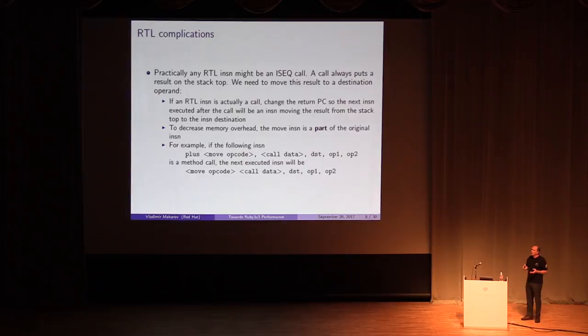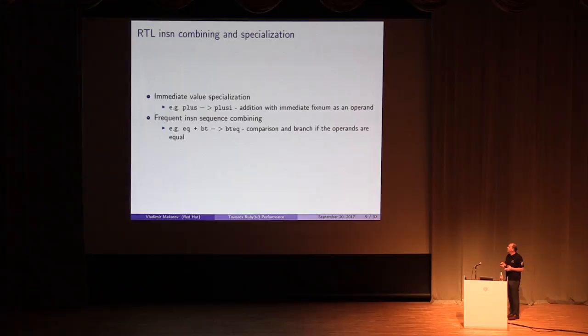To decrease the size of RTL code and overall number of instructions, we generate specialized instructions with immediate operands, like an addition with a known fixnum value. It removes an instruction which puts this value into some temporary. We also combine frequently executed pairs of compare and branch instructions. It also reduces the number of instructions and overall code size.